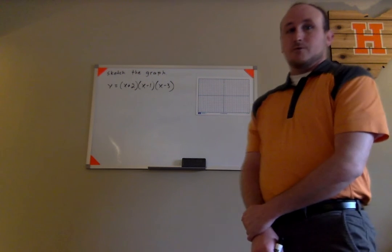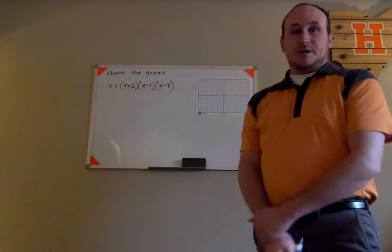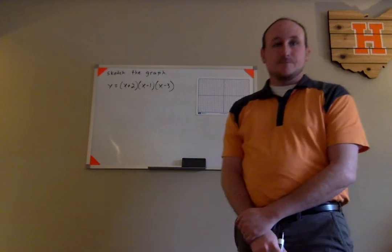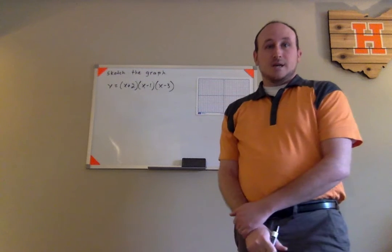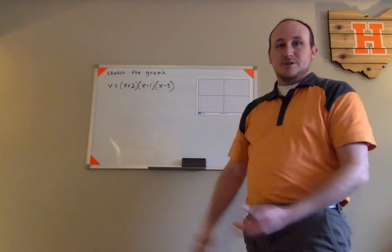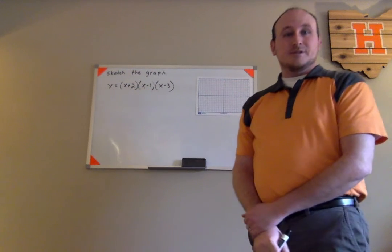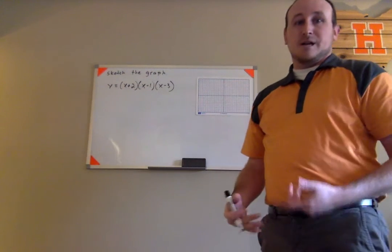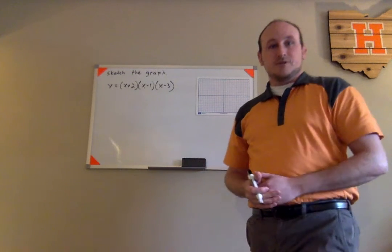We're going to take a look at how to sketch the graph of this polynomial function that we looked at in a previous example. Here we have this polynomial function in its factored form — three linear factors. We don't need to multiply this out into its standard form; we just need to know that multiplying these three linear factors together produces a cubic polynomial function, which will be useful when we talk about end behavior. Let's first start with the zeros of this function.